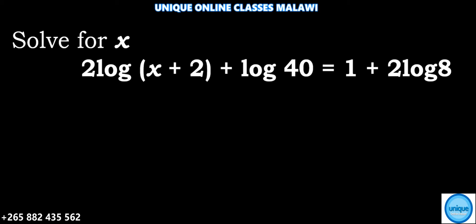The question reads: solve for x, 2log(x+2) + log 40 = 1 + 2log8.